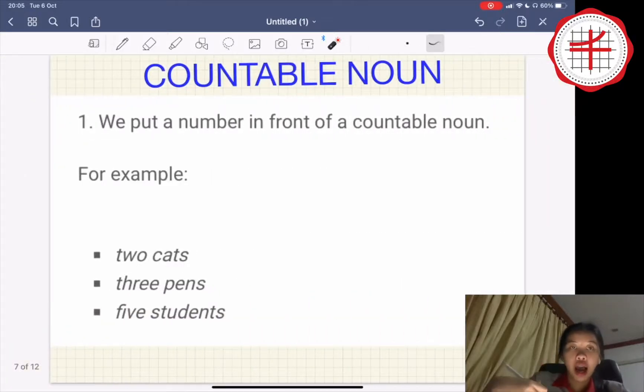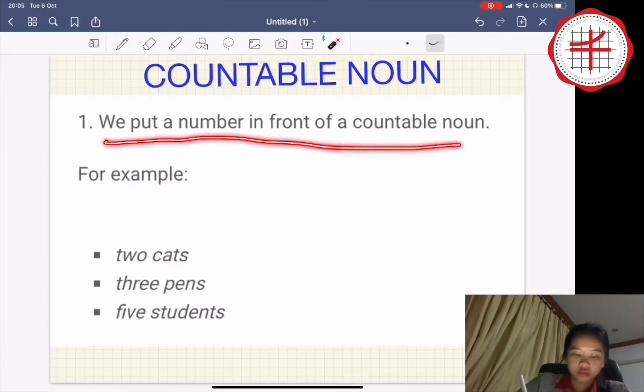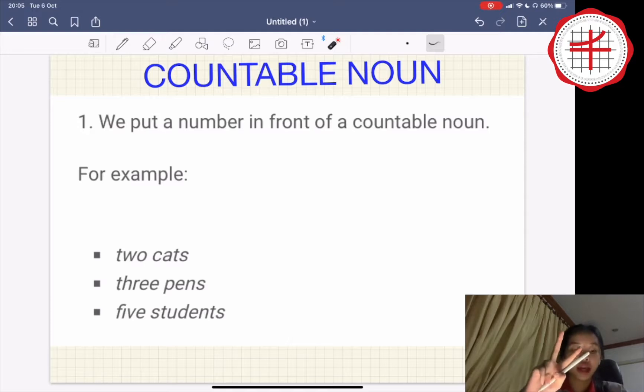Another one is learn how and when to use articles with countable nouns. First, we put a number in front of a countable noun. For example, two cats, three dogs, three pens, five students, like this.